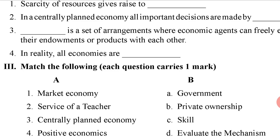The answer to the third blank is market economy. In a market economy, the intervention of government is not there; economic decisions are taken according to market forces — demand and supply. Fourth blank: in reality, all economies are mixed economies. As we know, there are three types: centrally planned economy, market economy, and mixed economy. In reality all economies are mixed economies.